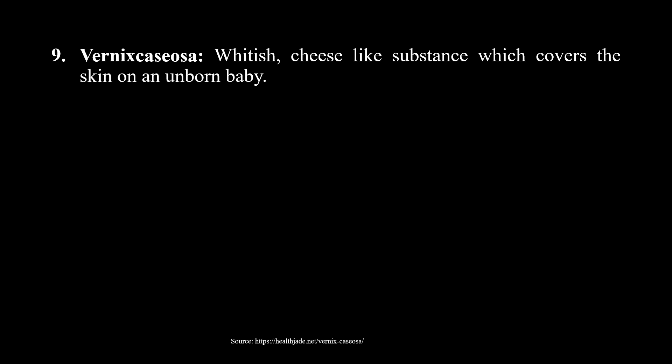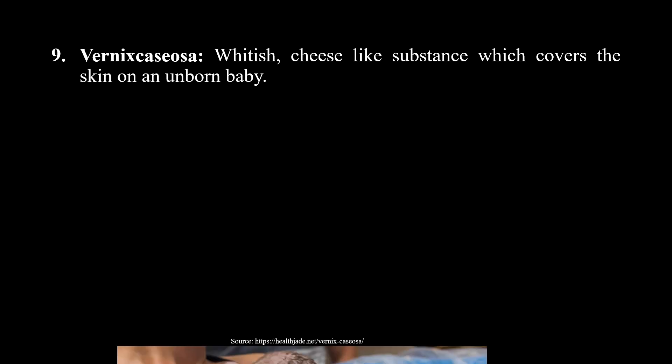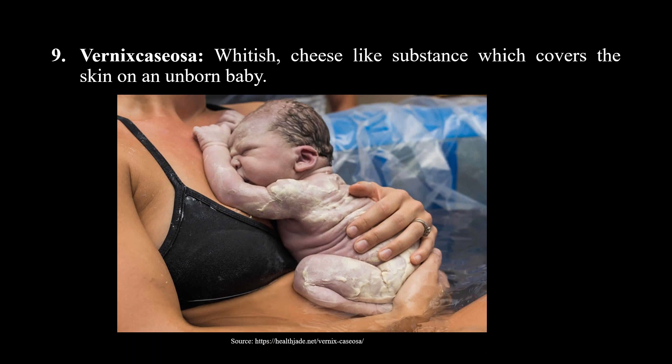Vernix caseosa is a white cheese-like substance which covers the skin of an unborn child. It is white in color and it protects the skin and facilitates extra-uterine adaptation of the skin. Vernix caseosa is helpful and normal for the baby's skin.